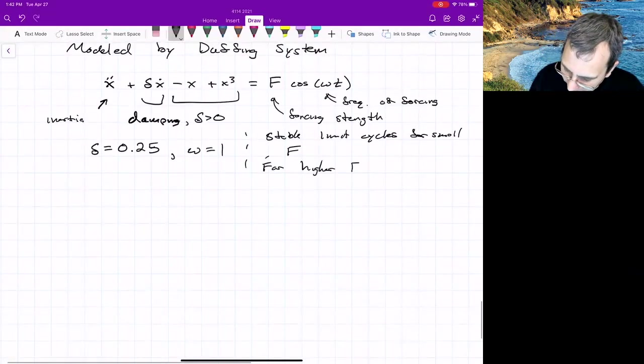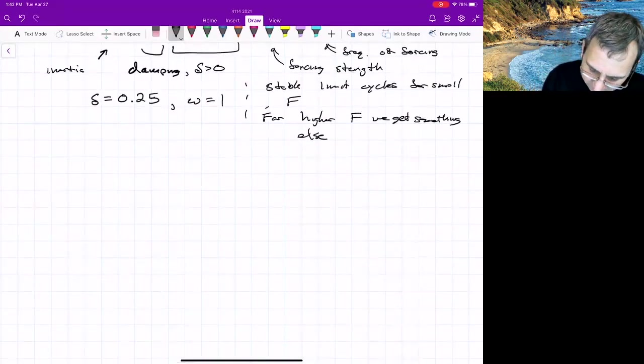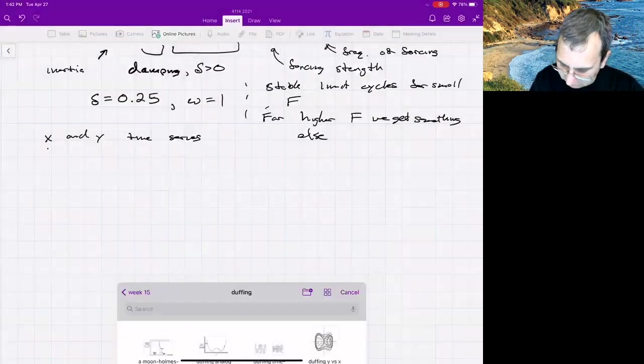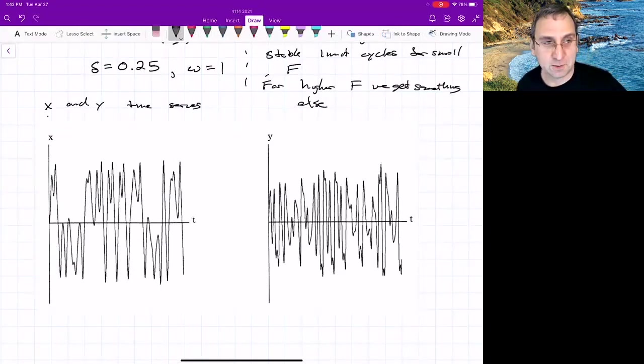For a higher F, we get something else. And if you were to look at the plots of X and Y, so here's X and Y time series, we get something like this. Kind of look chaotic. The thing on the left almost looks like it could have come from the Lorenz system.